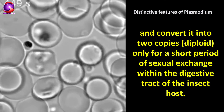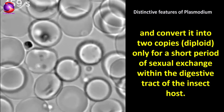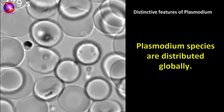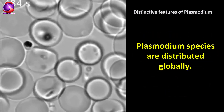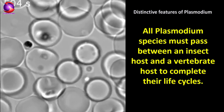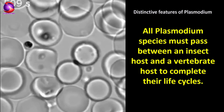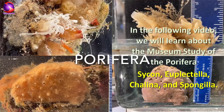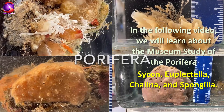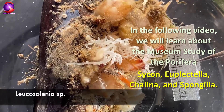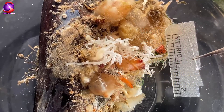only for a short period of sexual exchange within the digestive tract of the insect host. Plasmodium species are distributed globally. All Plasmodium species must pass between an insect host and a vertebrate host to complete their life cycles. In the following video, we will learn about the museum study of phylum Porifera: Sycon, Euplectella, Cliona, and Spongilla.